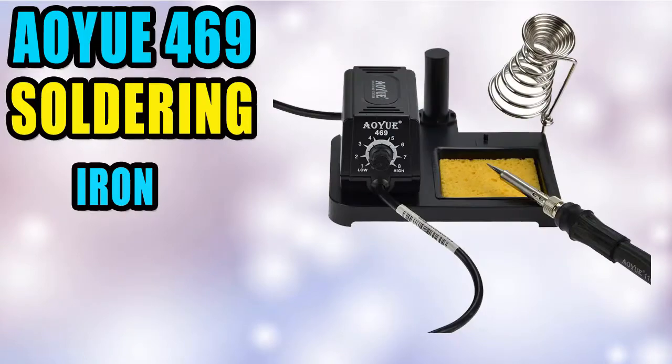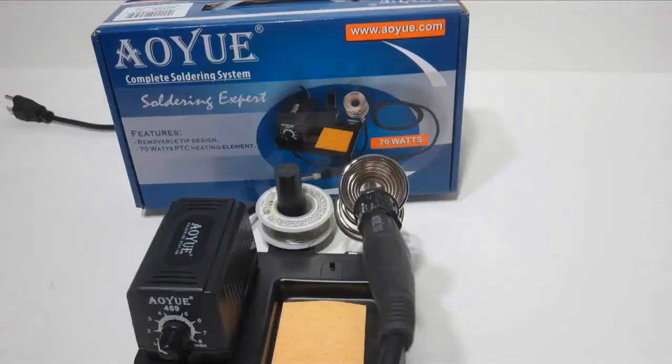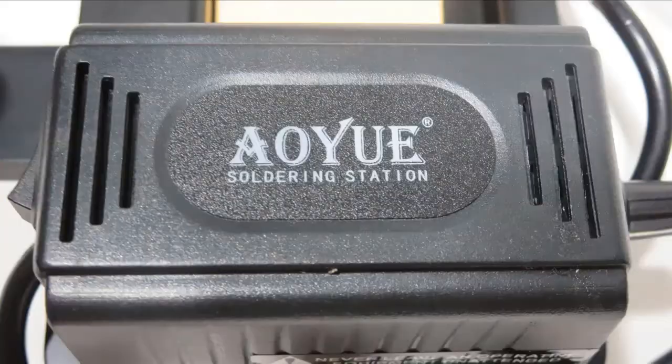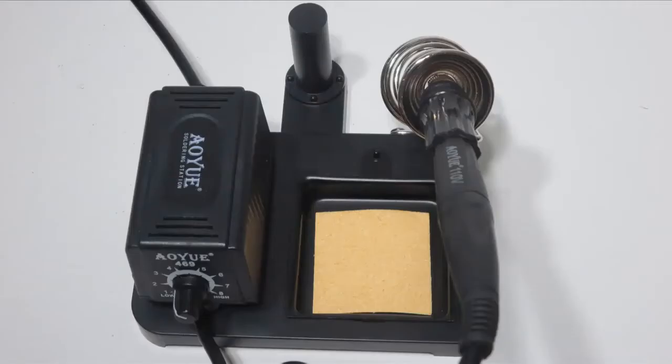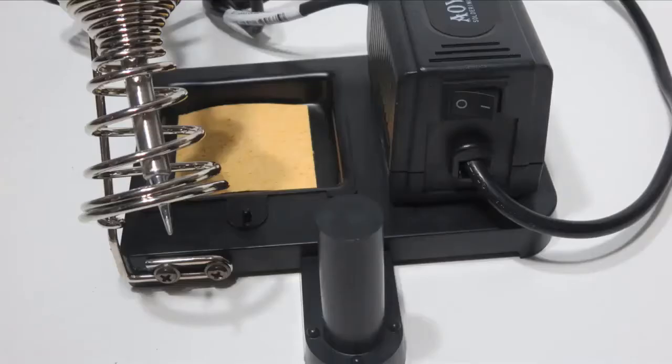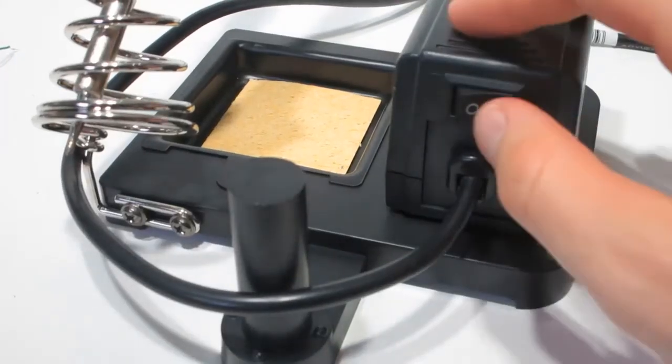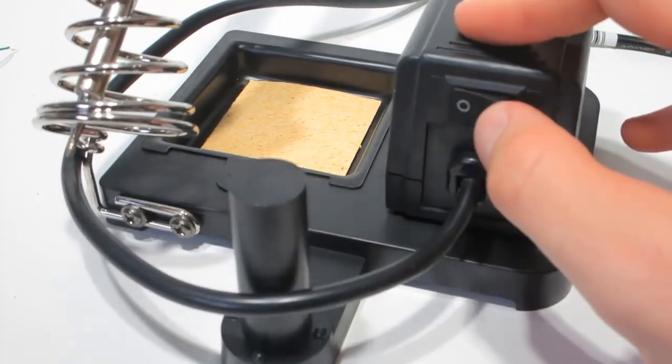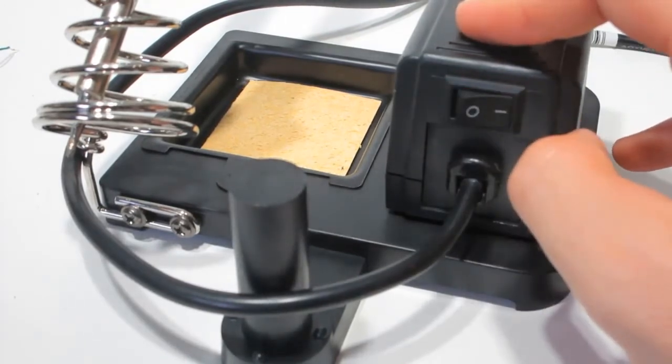At number four we have AOYUE 469 variable power 60 watt. 60 watt iron with over 50 available tip sizes, TI is included, PTC element for fast heat up and accurate temperature control. Temperature range 200 to 480 degrees Celsius.